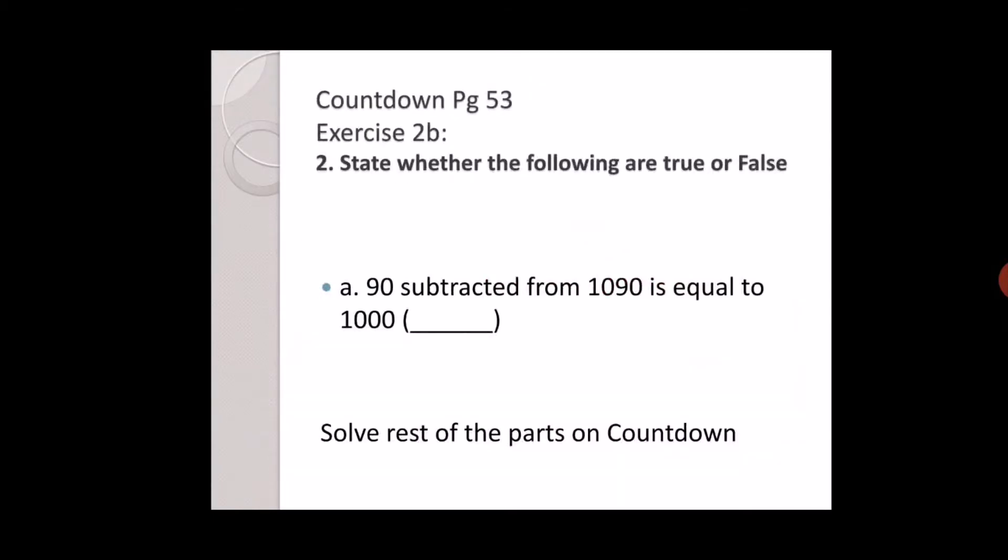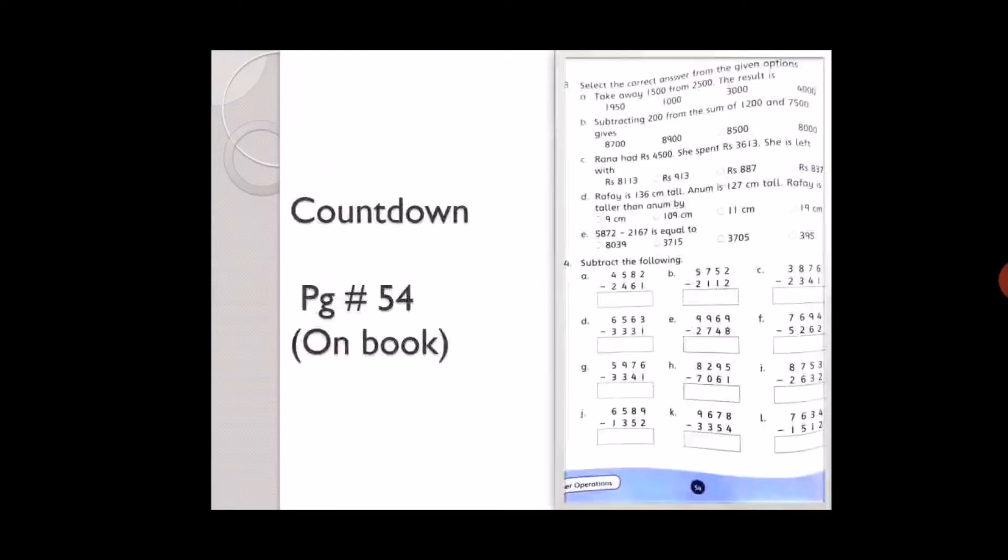Exercise 2B. State whether the following are true or false. Ninety subtracted from one thousand ninety is equal to one thousand. Yes, it is true.